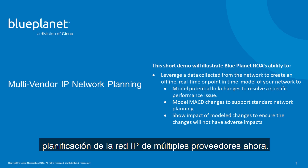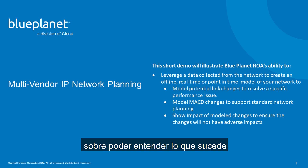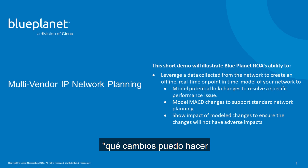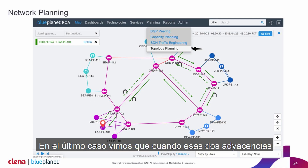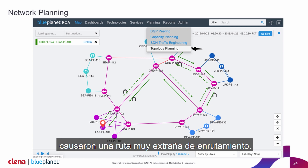Matt, I think we're going to talk about multi-vendor IP network planning now. As I mentioned, being able to understand what's happening from a root cause perspective, we also need to be able to go: what changes can I make and what kind of impact did they have on a particular outage? In the last case, we saw where those two adjacencies failed at the same time and caused a very strange routing path.